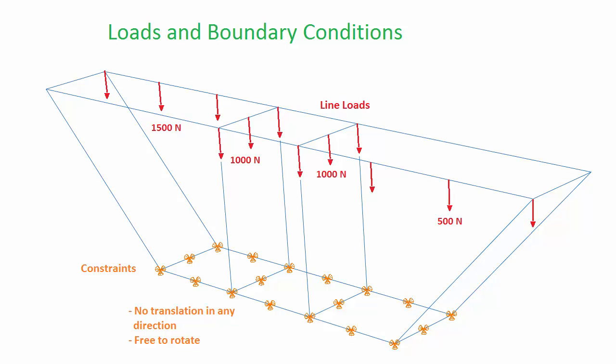The structure is fixed at the bottom. All the beams on the lower side are constrained in such a way that they cannot translate in the X, Y, or Z direction. However, they are free to rotate. Line loads of 1500, 1000, and 500 Newtons are applied as shown in the figure.